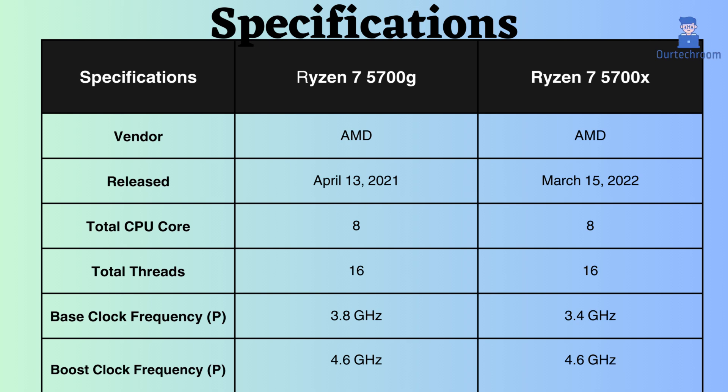The base clock frequency of the Ryzen 7 5700X is 3.4 GHz, while that of the Ryzen 7 5700G is 3.8 GHz. With the higher base frequency of the Ryzen 7 5700G, it proves advantageous when the CPU is under normal loads.